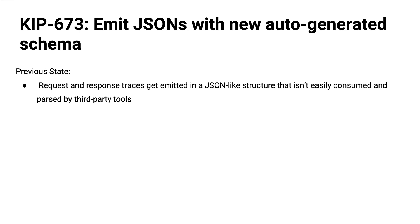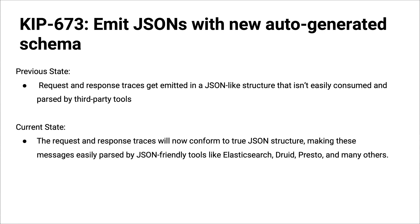KIP-673: Emit JSON with new auto-generated schema. There's request tracing you could turn on — if you set the request channel to debug, you'd get JSON-like output from that request trace. By 'JSON-like' I mean there were curly braces and we were supposed to respect that, but it wasn't parsable as JSON. Now with this KIP it actually is, so you can extract and parse it with any tool that parses JSON — a huge win for interpreting logs in a smart way.